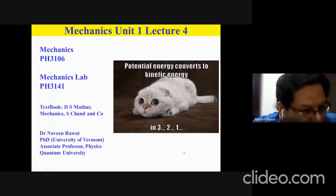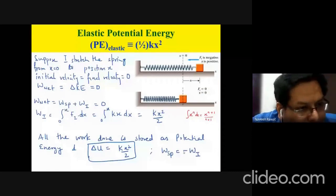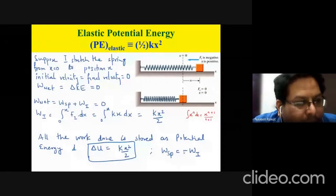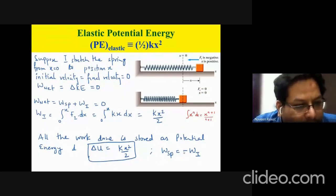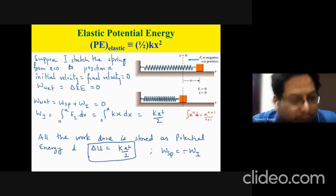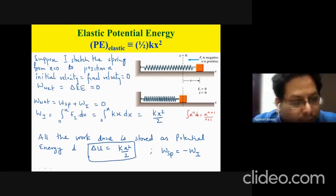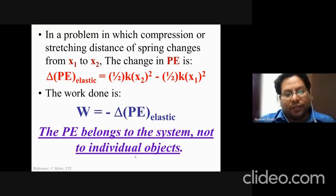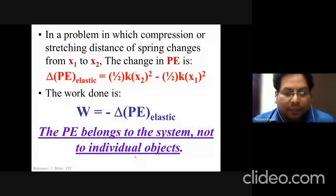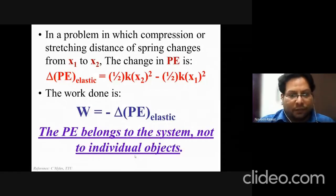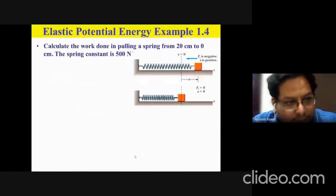Good morning everybody. Today's lecture is going to be on conservative forces. In the last lecture we saw elastic potential energy — we took the condition of the spring and said you can stretch the spring and there will be a restoring force generated. We found the work required to stretch the spring, and said the work of the spring is the negative of the work someone has to do in stretching it. We derived the expression one-half kx², which is the potential energy developed in the spring. The work done is the negative of the change in potential energy of the system — this potential energy belongs to the entire system, not just to individual objects.